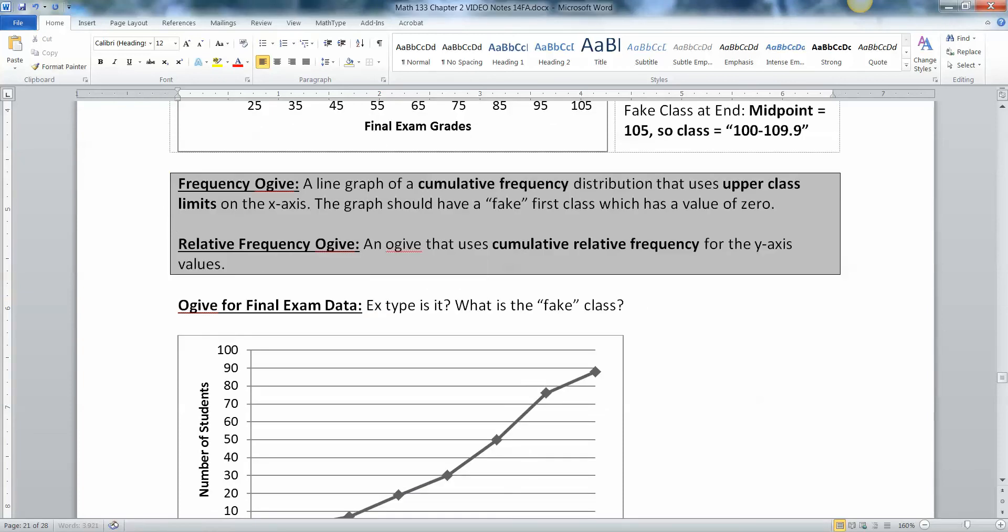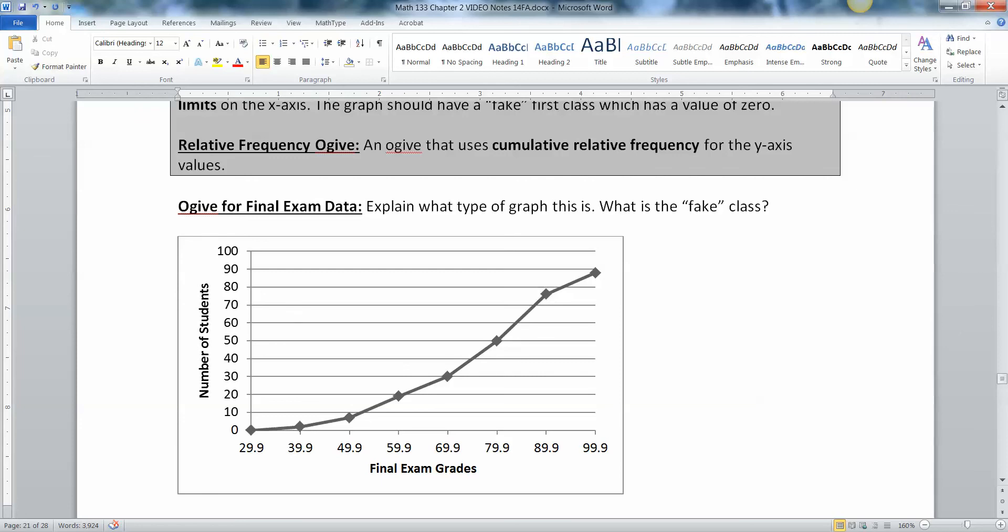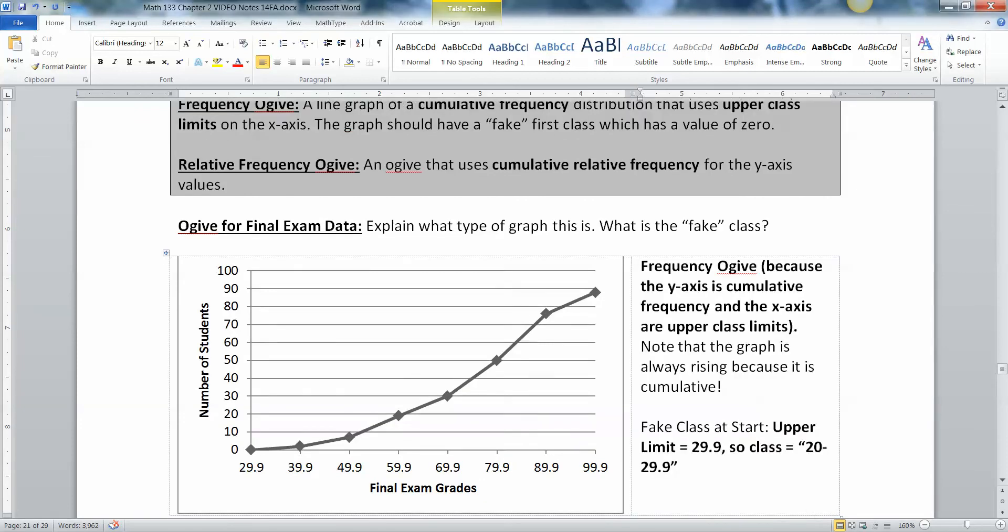So, and again, I'm going to change this explain what type of graph this is, and then what is the fake class? Because there's only one fake class here at the very beginning. All right. So let me type that up one second. There we go. It's a frequency ogive, and it's a little bit harder to see because frequency, it's not going to say percent or something like that, but you can tell it's frequency because it's talking about number of students. But you can tell it's cumulative because the graph is constantly going up. It's always rising. It's always increasing.